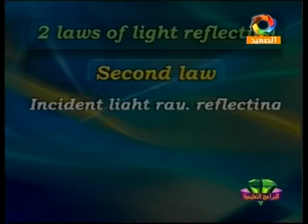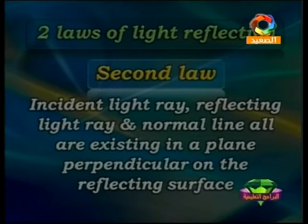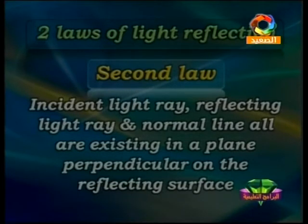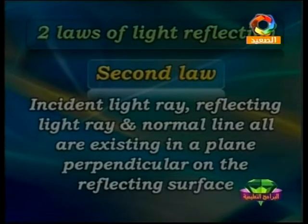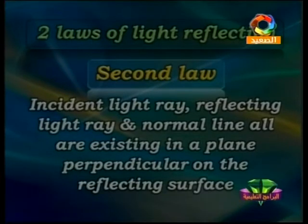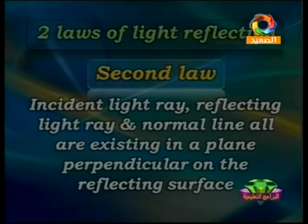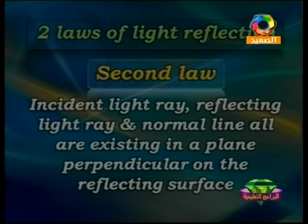The second law of light reflection states: the incident light ray, the reflected light ray, and the normal line all exist in the same plane, and that plane is perpendicular to the reflecting surface. The reflecting surface is the mirror or metal surface. These rays and the normal line are found in a plane in the form of a perpendicular line.